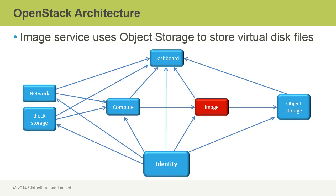The image service does not store the images itself. The image service uses object storage, or potentially another provider, but most of the time it's object storage, to store virtual disk files — which are the images that in turn become instances that in turn are run by compute. In order to access those images, compute has to go through the image service. Compute cannot just go out and talk to object storage directly. Images are managed by the image service and provided to compute as needed.